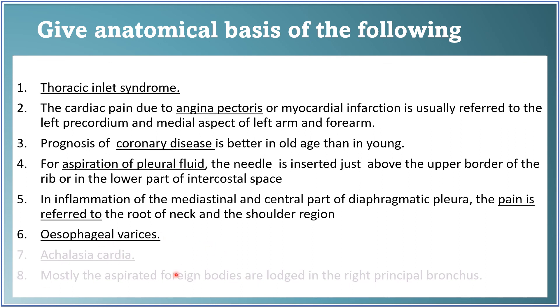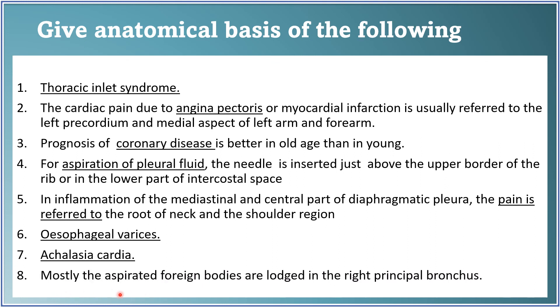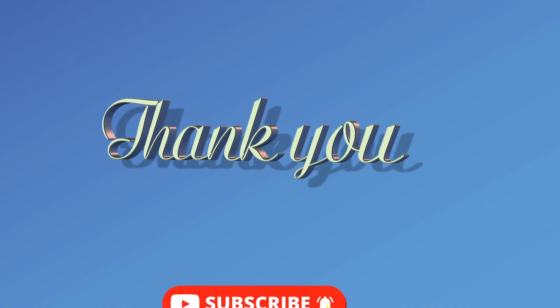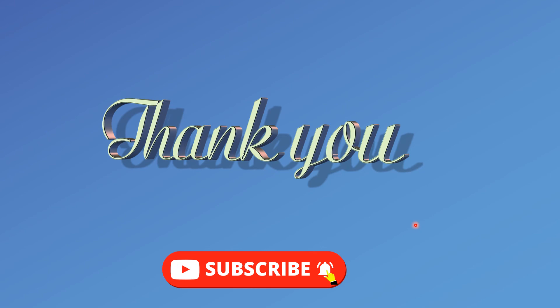Esophageal varices in portal hypertension must be mentioned. Achalasia cardia — why the smooth muscle of the lower end of the esophagus fails to relax. Lastly, aspirated foreign bodies are most often lodged in the right principal bronchus because it is more directly in line with the trachea and is broader and shorter. These are all the anatomical basis questions. For answers, visit anatomyqa.com — the link is in the description box. Thank you for listening.